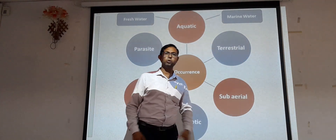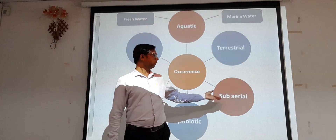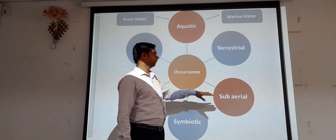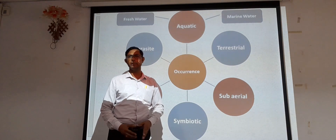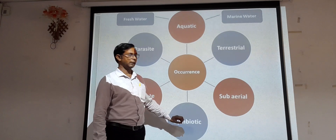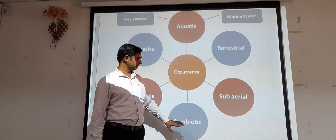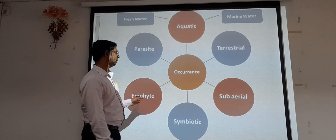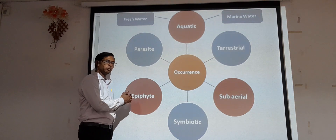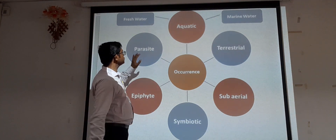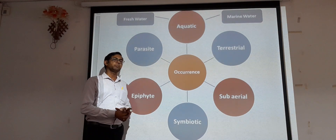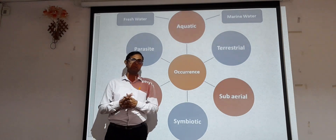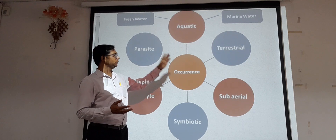They also grow on the subareal parts, for example in dead and decaying plant material. They also occur as a symbiotic association in the form of lichen — the majority of lichens show the presence of Chlorophyceae members as a symbiotic partner. Along with that, epiphytic growth is also observed in Chlorophyceae, and importantly, some members also occur as parasites.